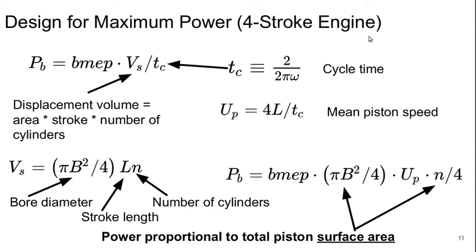So if we design for maximum power in a four-stroke engine, which is the only kind that we're going to consider, then the power is the mean effective pressure times the displacement volume of the engine. So that's the area times the stroke of the pistons times the number of cylinders, divided by the cycle time TC.